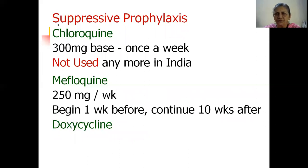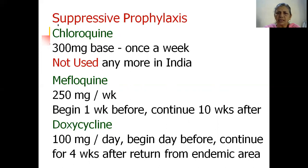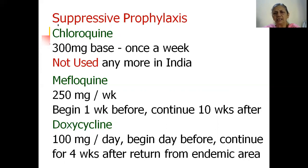The drugs used today for suppressive prophylaxis are mefloquine 250 mg per week, begun one week before going to the endemic area, continued throughout the stay, and for 10 weeks after returning. Doxycycline 100 mg per day can be started just one day before going to the endemic area, continued throughout the stay, and for four weeks after return. Doxycycline must be taken daily but has the advantage of a shorter lead time. However, being a tetracycline, doxycycline is not to be used in children or pregnant ladies.